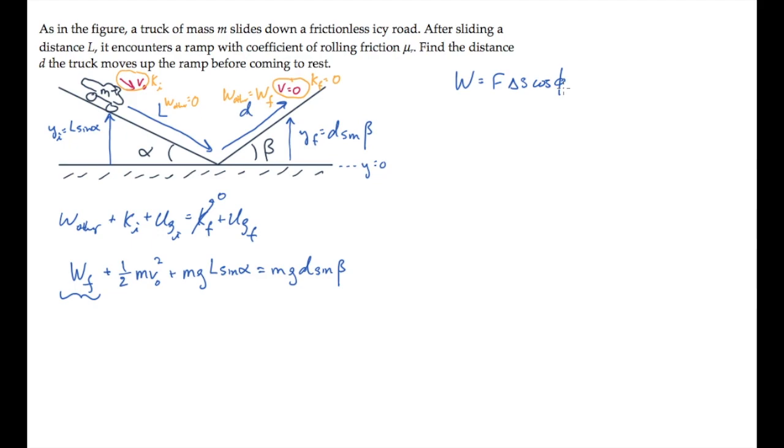In this case, the force is friction, and the truck moves a distance d while friction acts on it. The angle between those two is 180 degrees. Friction opposes the motion. So the work done by friction is minus μr times n, that's the force of friction, times the distance d.